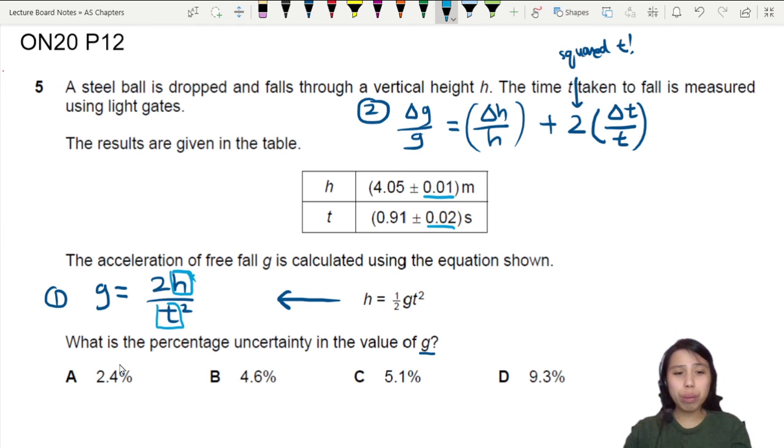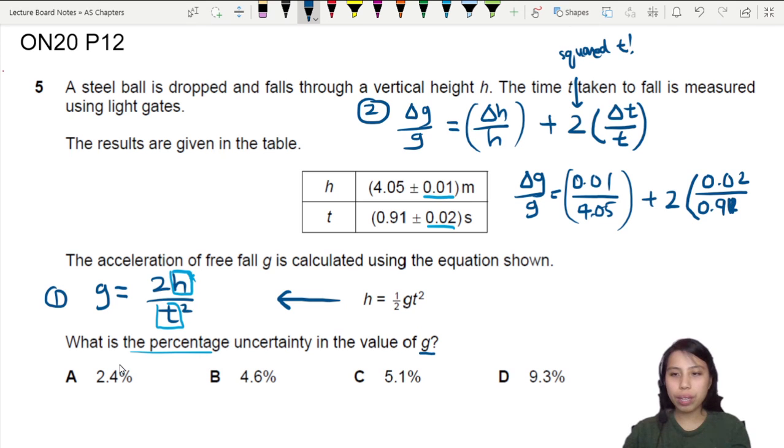So let's go first. Later we want percentage value. That one later we convert. Delta g over g will then equal to 0.01 over 4.05 plus two times, so 0.02 over 0.91. I'm just taking the uncertainty divided by the value and I get this. So if I press calculator, I should get 0.046. And this is a fraction not yet percentage.